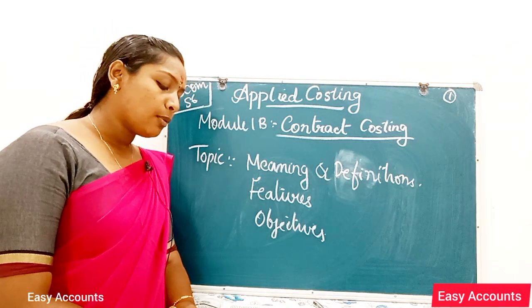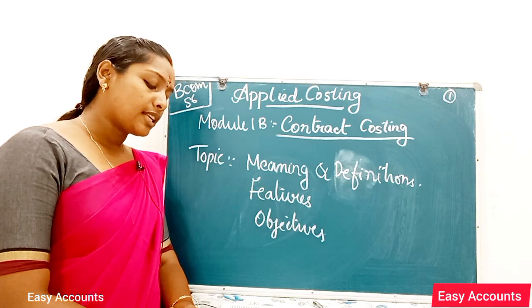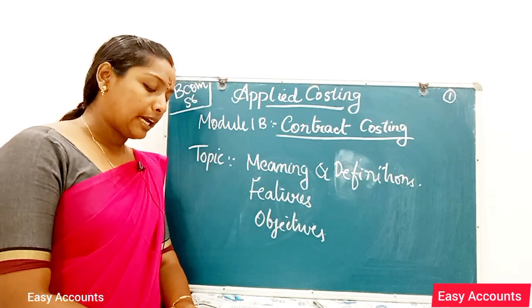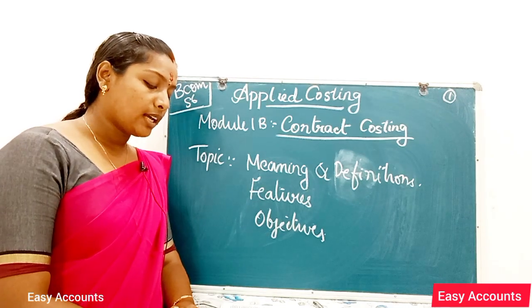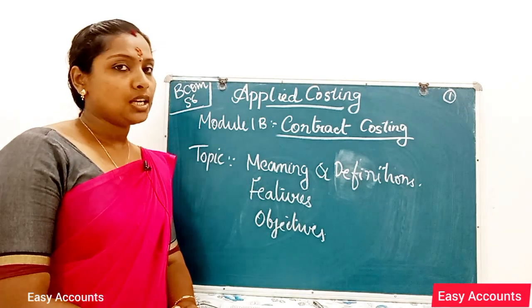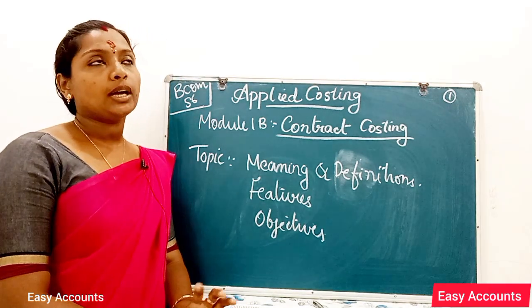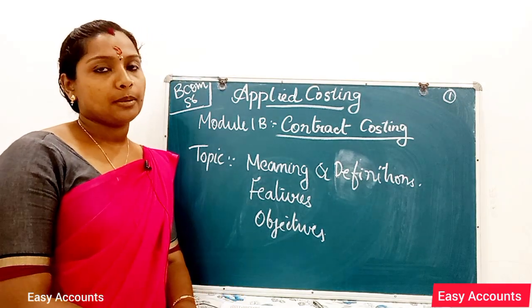The first feature of contract costing: there will be a large number of contracts in execution at a time. Each contract is treated as a separate cost unit.